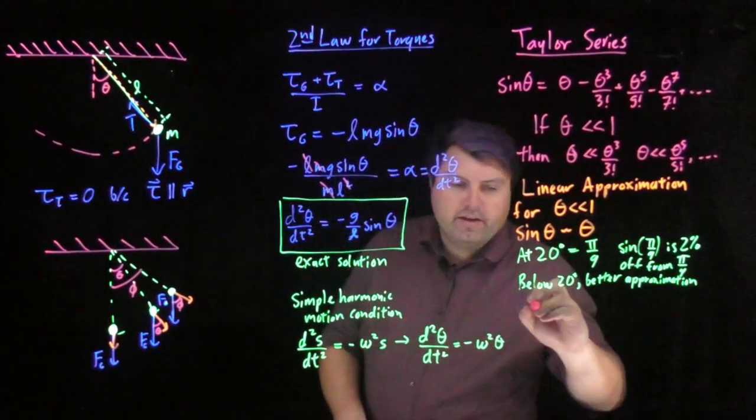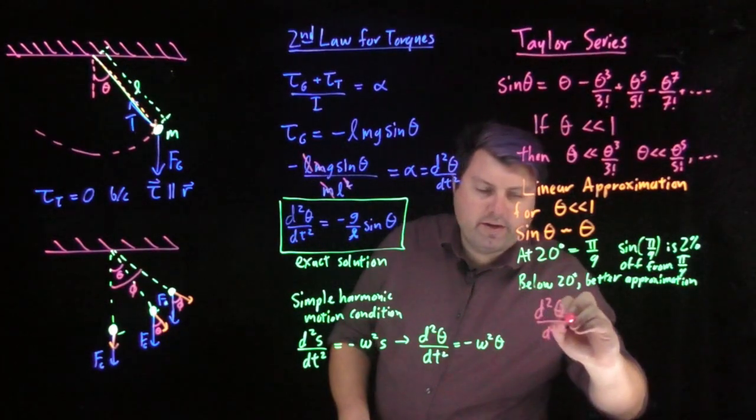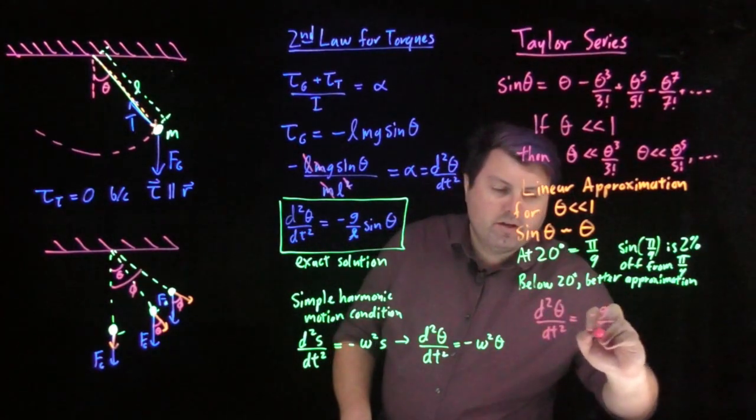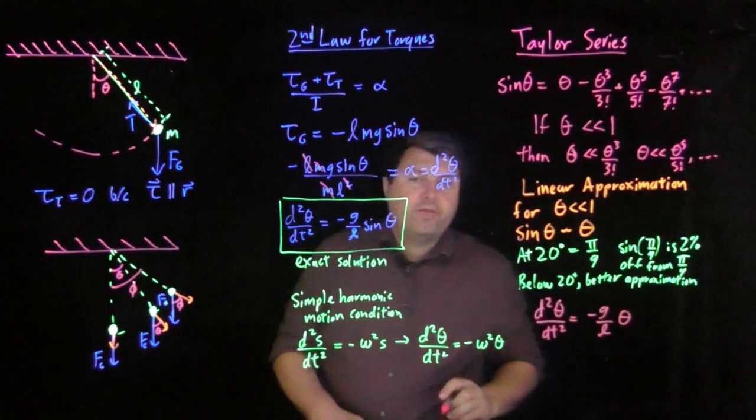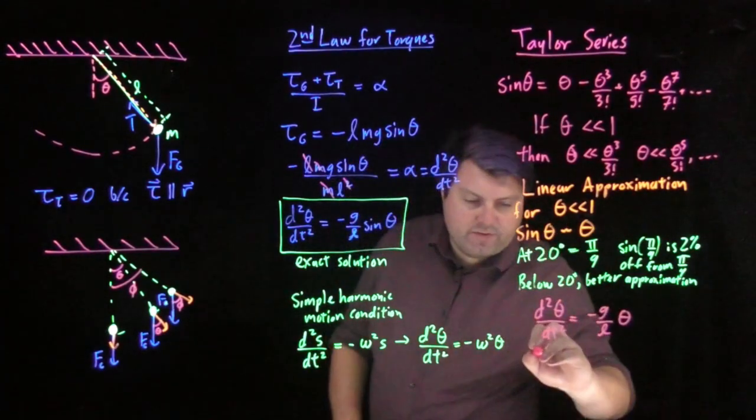So if we have this linear approximation, then we can say d squared theta dt squared is equal to negative g over l theta. We're using this linear approximation, and this gives the solution.